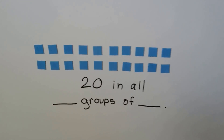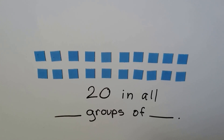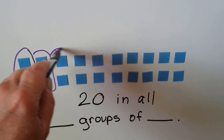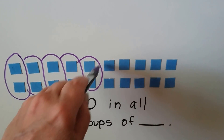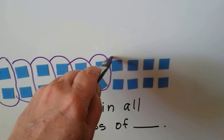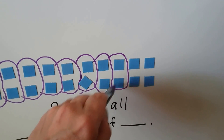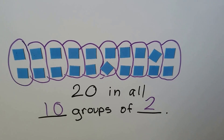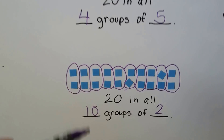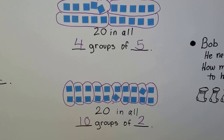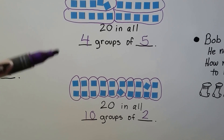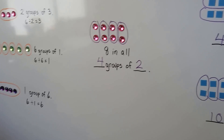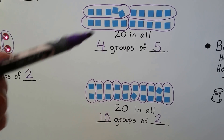How else can we do this? If we have twenty in all, how else can we split this up? We can actually make ten groups with two in each group. We could also have made five groups that each have four in them. There are all different ways to separate twenty — we could have made twenty groups with one in each, or one big group with twenty in it. There are all different ways to split up numbers.